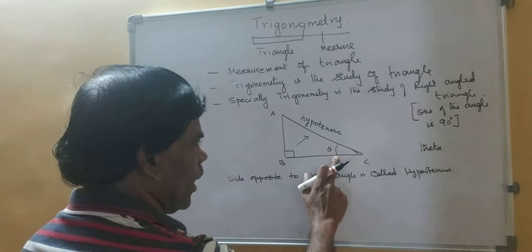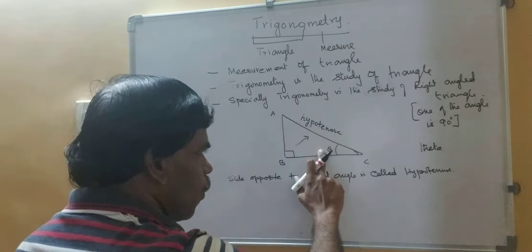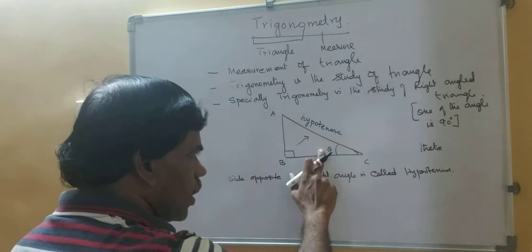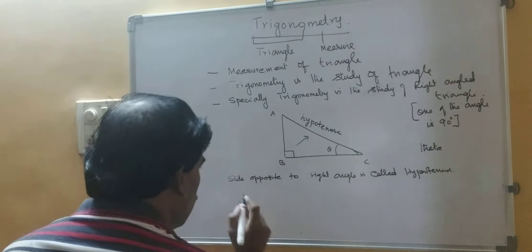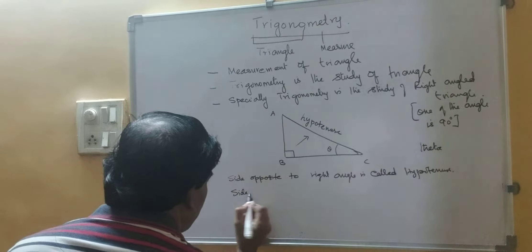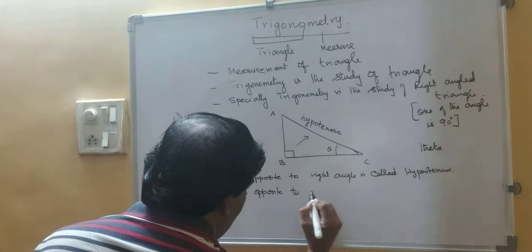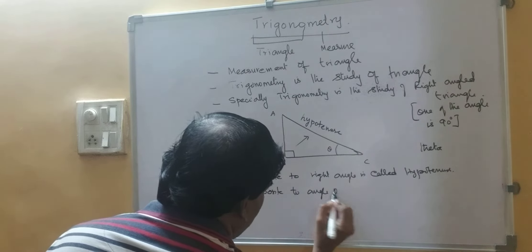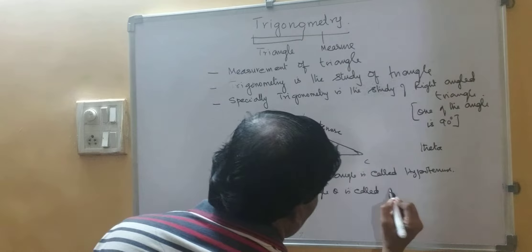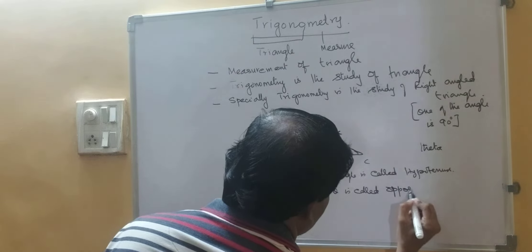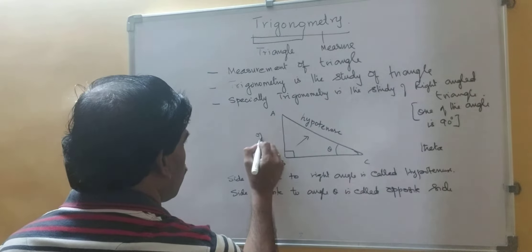Now look at angle theta. What is the side opposite to angle theta? That is AB. The side opposite to angle theta is called the opposite side.